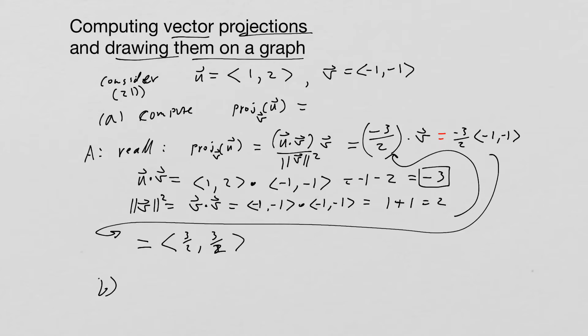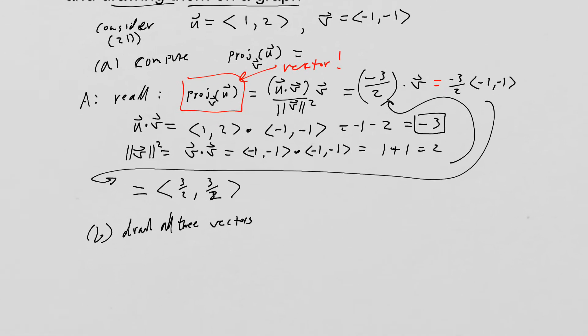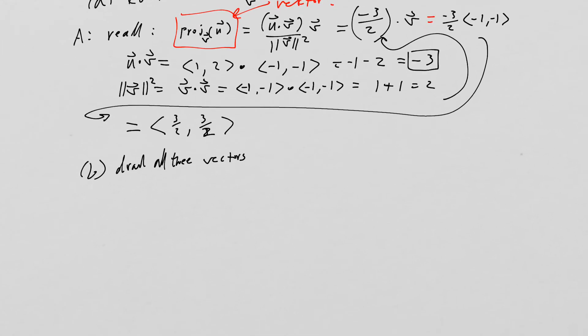So part B is going to be to draw all three vectors. Because remember, when I'm computing the projection, this is itself a vector. So let's do that. I'm going to bring this up here, give ourselves a little room. Do my best at drawing this.